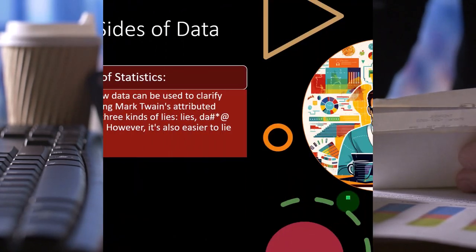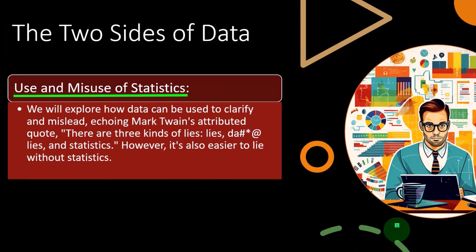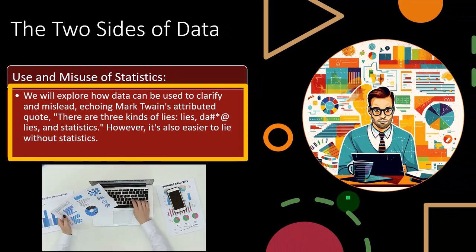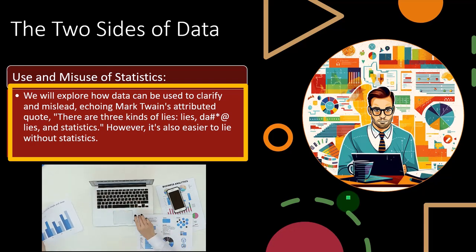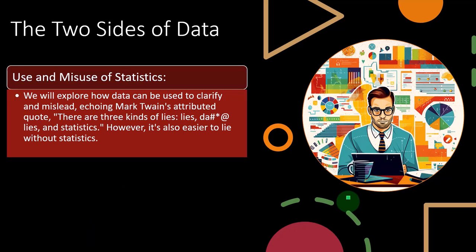The two sides of data are use and misuse of statistics. We will explore how data can be used to clarify and mislead, echoing Mark Twain's attributed quote: 'There are three kinds of lies — lies, dang lies, and statistics.' The idea being that statistics are meaningless and we're not getting anything from them because people just lie with statistics.